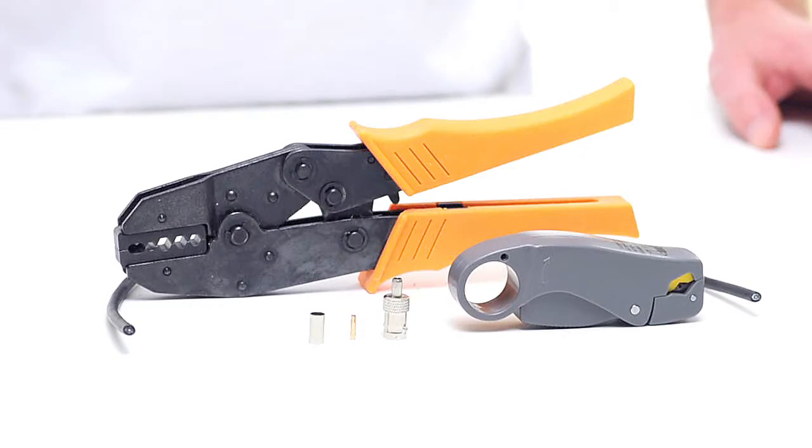For today's project we're going to need an RG6 PVC cable, a BNC three-piece female crimp connector, a coax stripper, and a crimp tool.